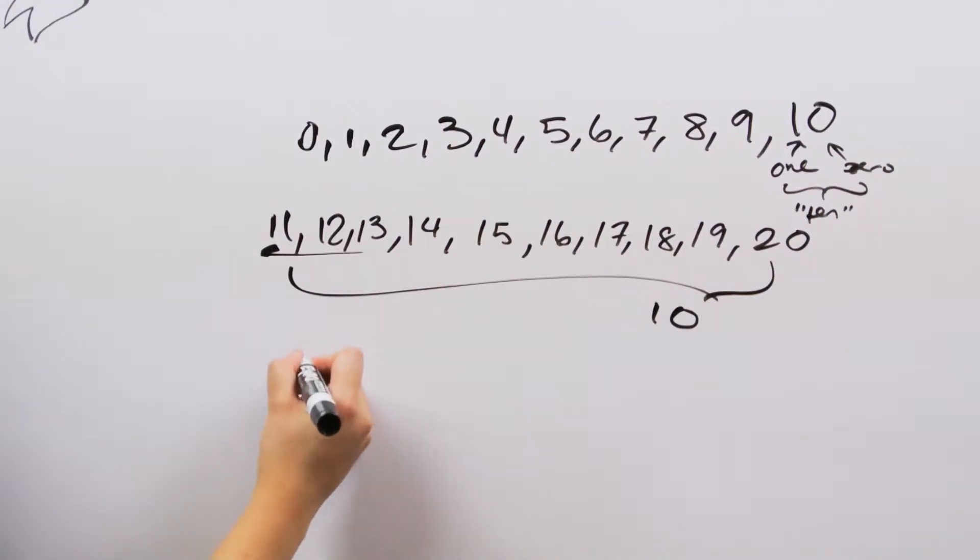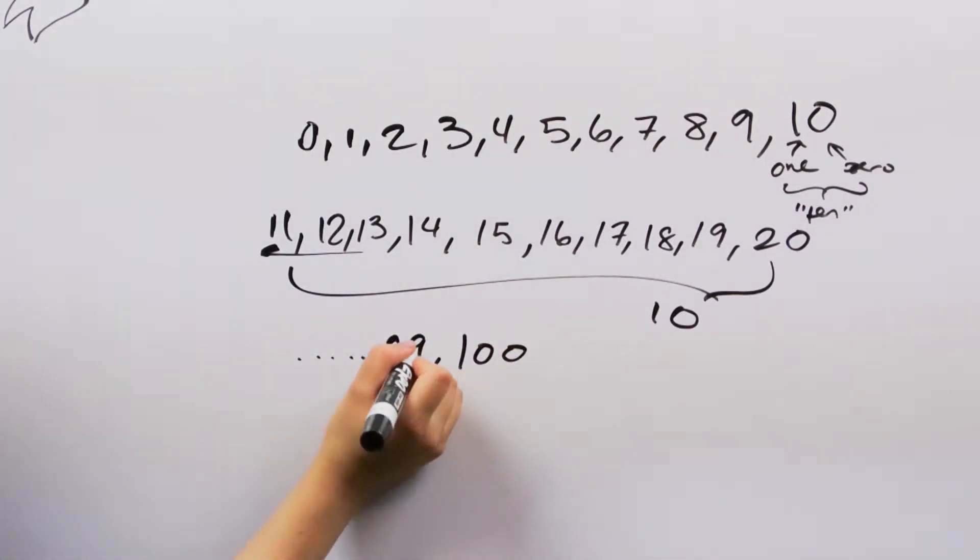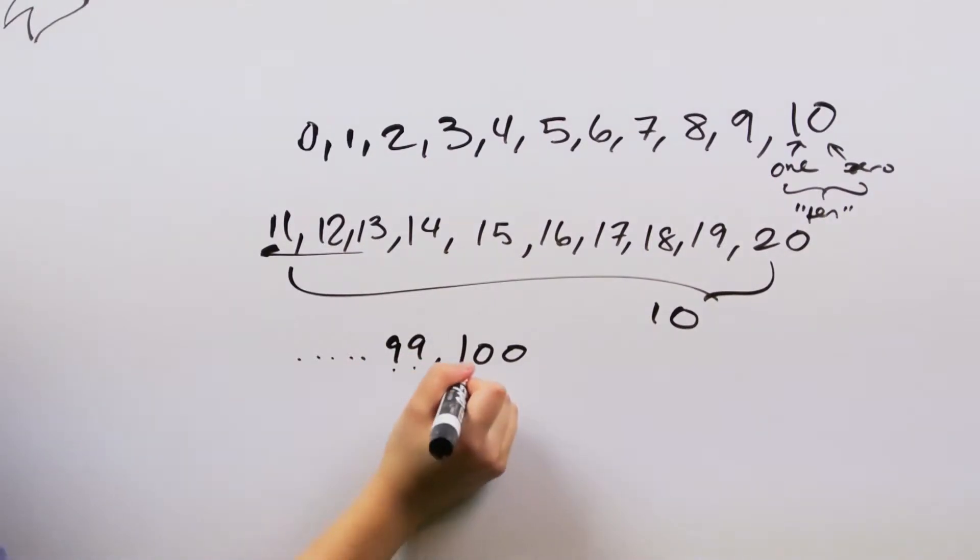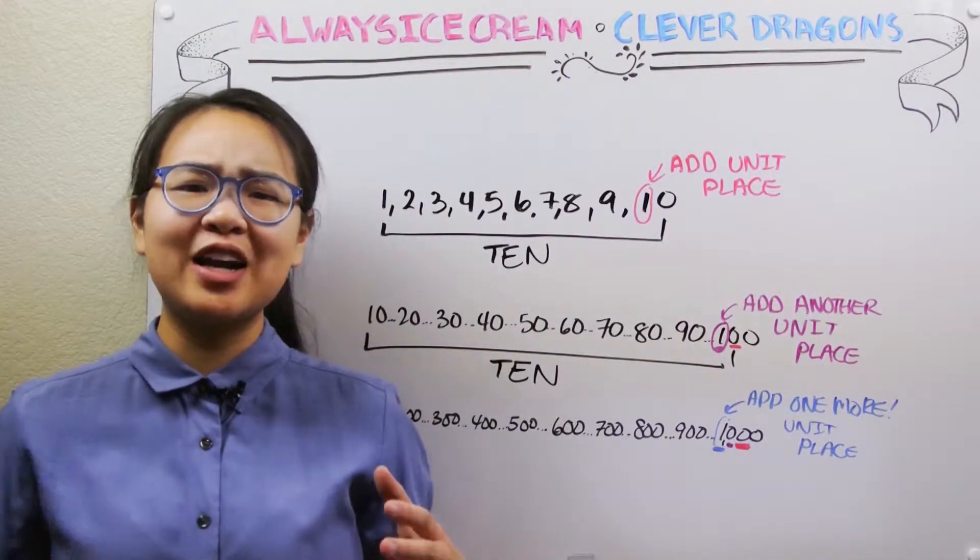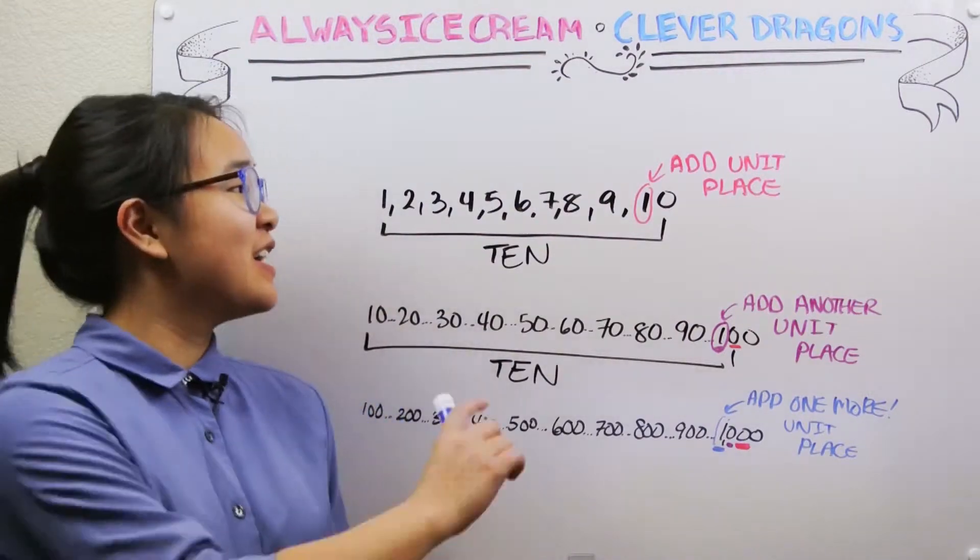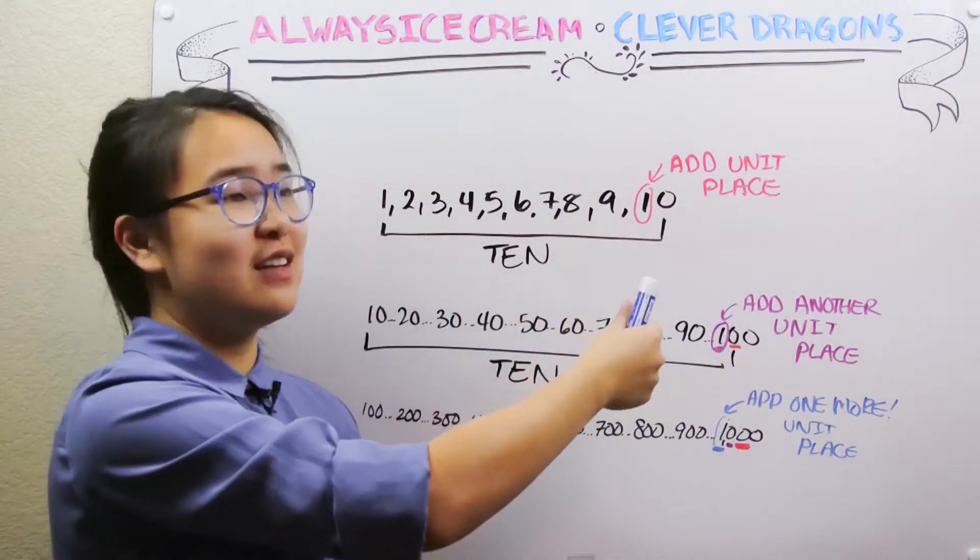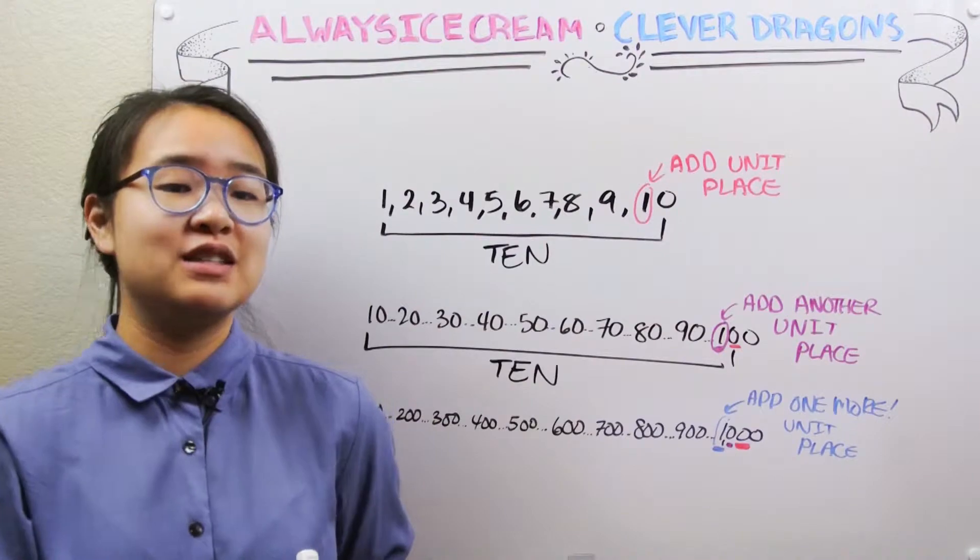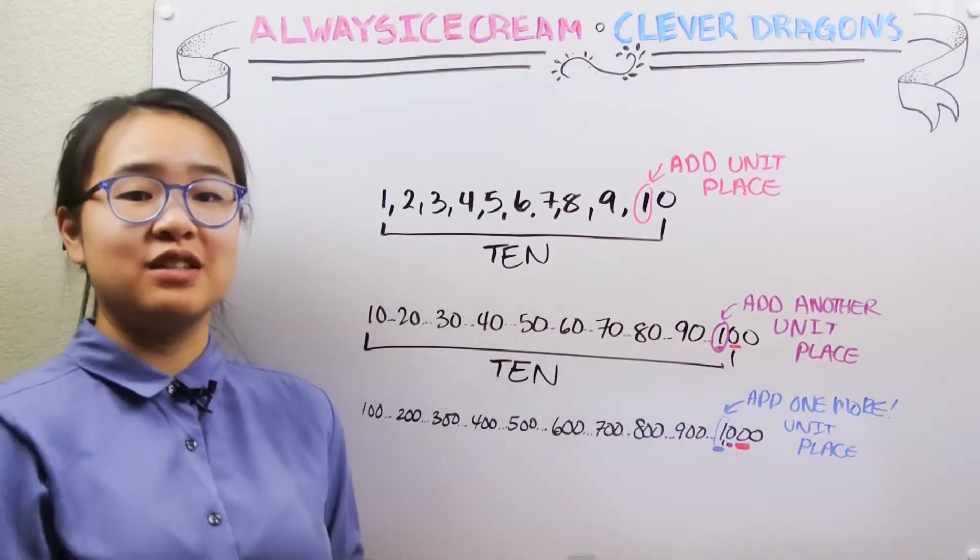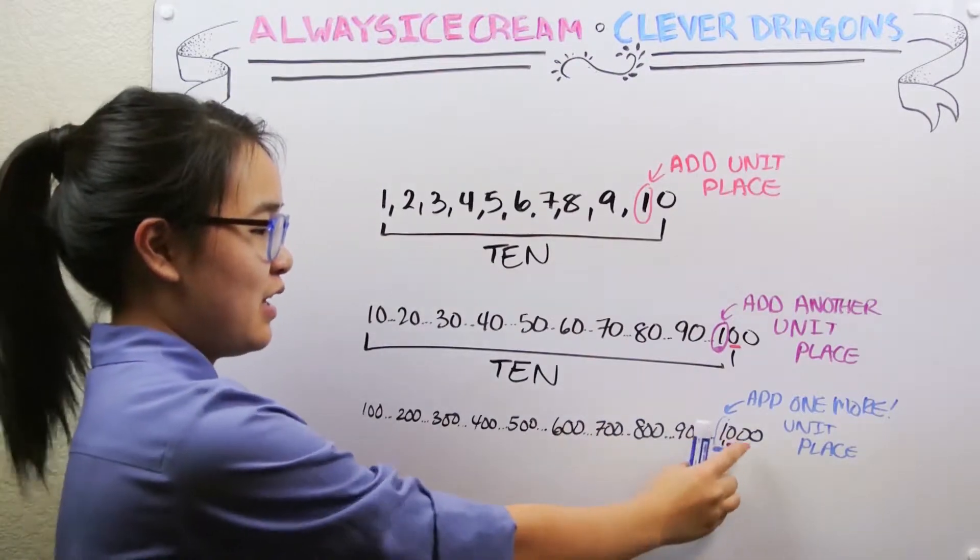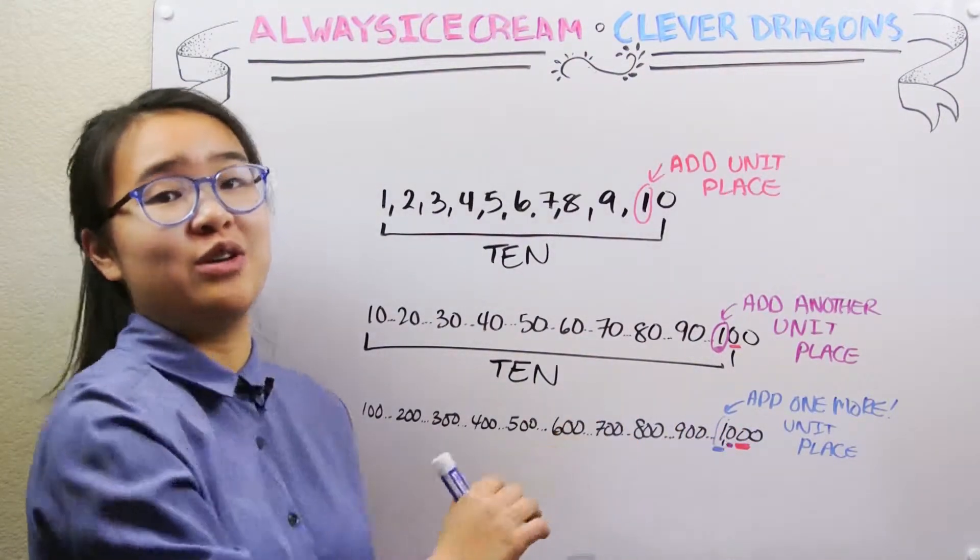And furthermore, if we were to keep counting, you might notice that once we hit 100, we add another number of places as well. So something goes from having two places over here to having three places total. So clearly, there is some kind of pattern in our number system. 10 ones make a 10, and we add a unit place. 10 tens make a hundred, and we add yet another unit place. And hundreds make a thousand, and we add one more unit place.